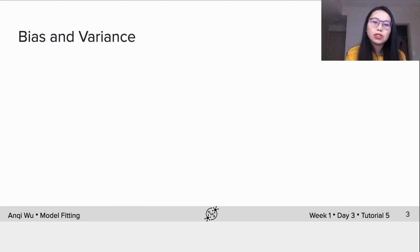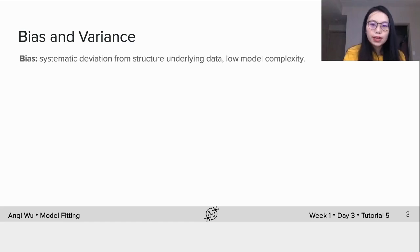Two criteria people use to choose the best models are bias and variance. Bias is defined as systematic deviation from structure underlying data. The bias is usually high with low model complexity.